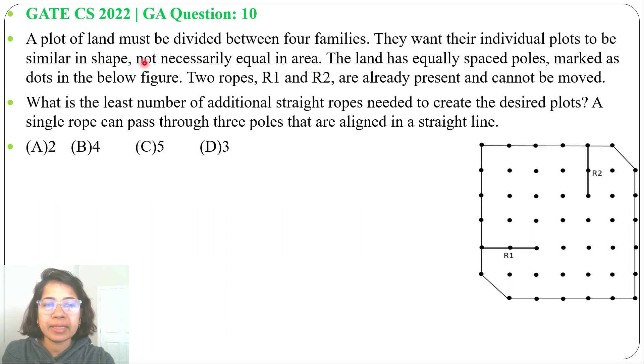It should be similar in shape, not necessarily equal in area. The land has equally spaced poles marked as dots in the below figure. These are the dots.